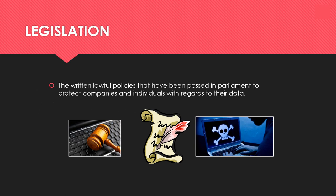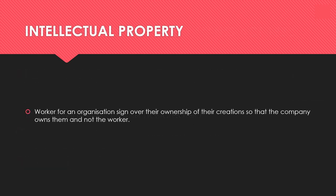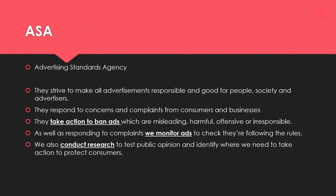The Copyright, Designs and Patents Act protects your own property — anything someone has created, including songs, music, software, inventions, books, video games and films. It makes it illegal to copy or share anything without permission. Intellectual property works differently in organisations: when you work for a company you sign over ownership of your creations to them, so if you leave, you cannot take that work with you.